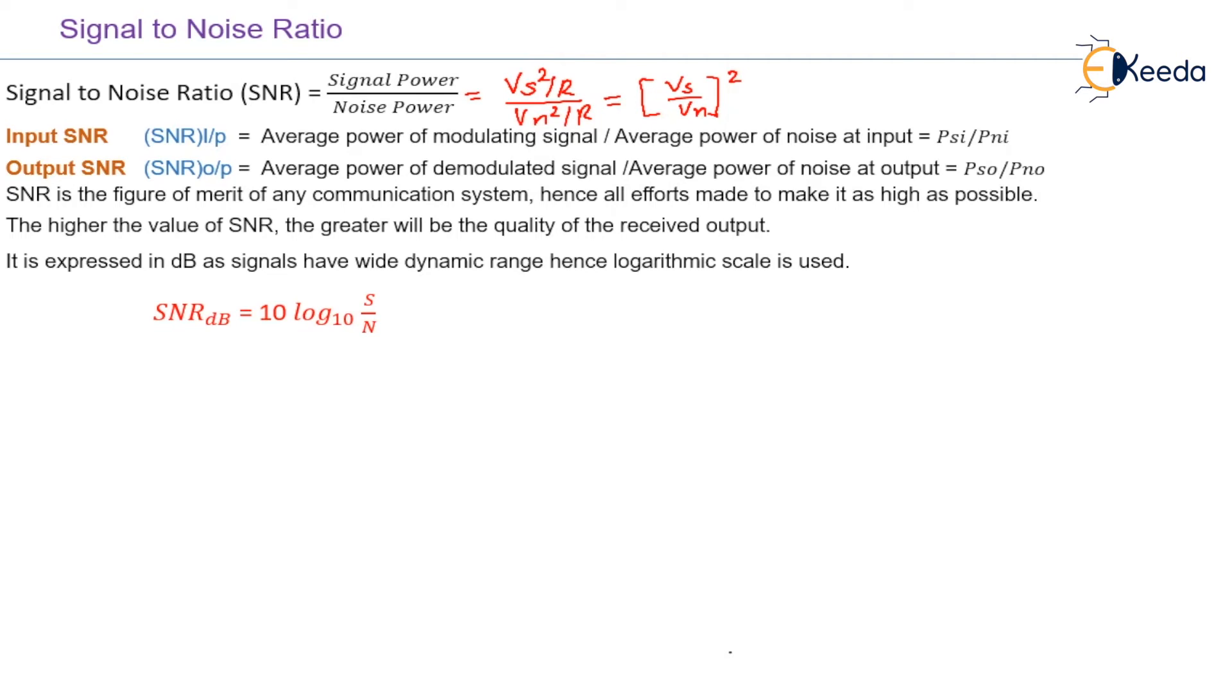Mathematically, signal to noise ratio is expressed as 10 log to the base 10 of S by N. So here you can substitute the above value that is Vs by Vn square. Basically it can be represented as 10 log to the base 10 of Vs by Vn square. So it will become 20 log to the base 10 of Vs by Vn.